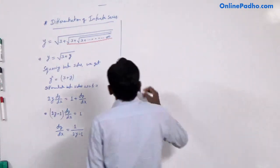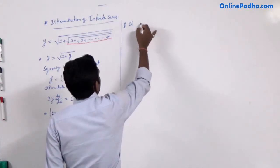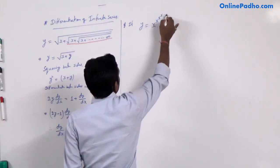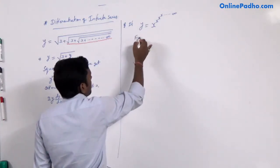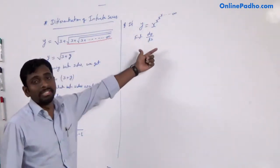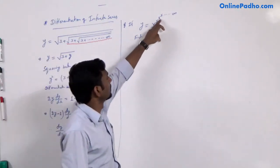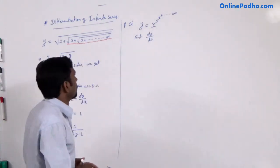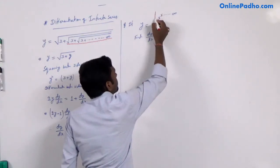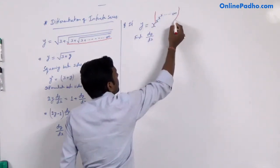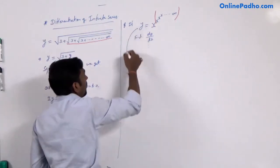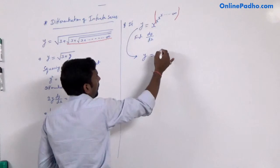Let us take another example. If you have y equal to x to the power x, to the power x, to the power x, and so on up to infinite, then find dy/dx. This is also a kind of infinite series. Again, we have to replace the sub-terms with y. This inner part is also called y, so this given function can also be written as y equal to x to the power y.